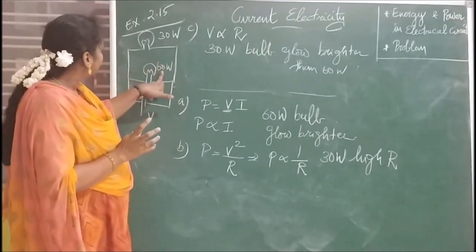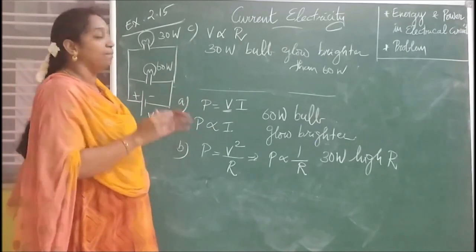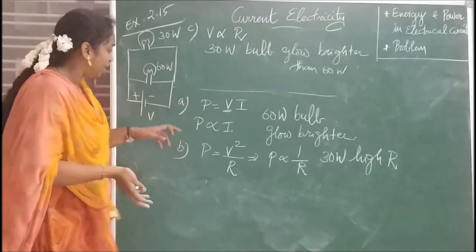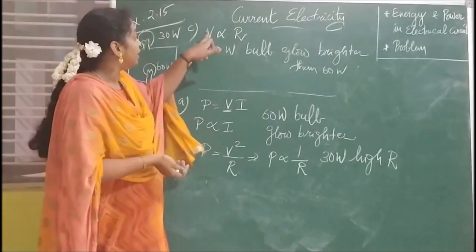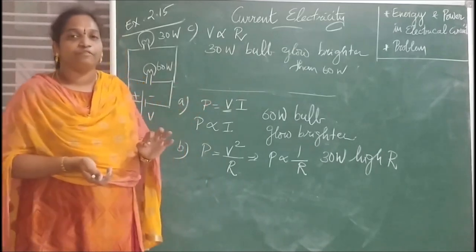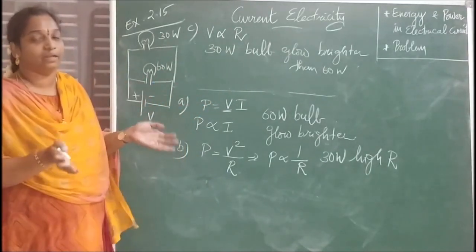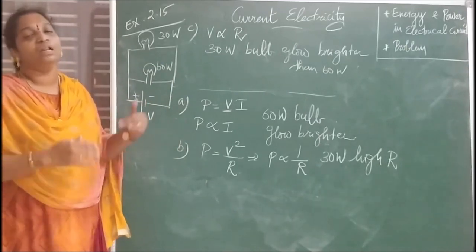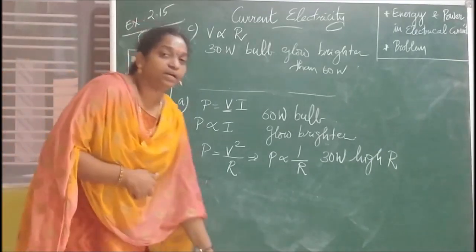From this problem you can observe that the power rating of 60 or 30 watts only represents the bulb's behavior depending on the connection — series or parallel. In parallel, the 60-watt bulb glows brighter. In series, the 30-watt bulb glows brighter. The rating alone does not tell you which bulb glows brighter without knowing the connection.